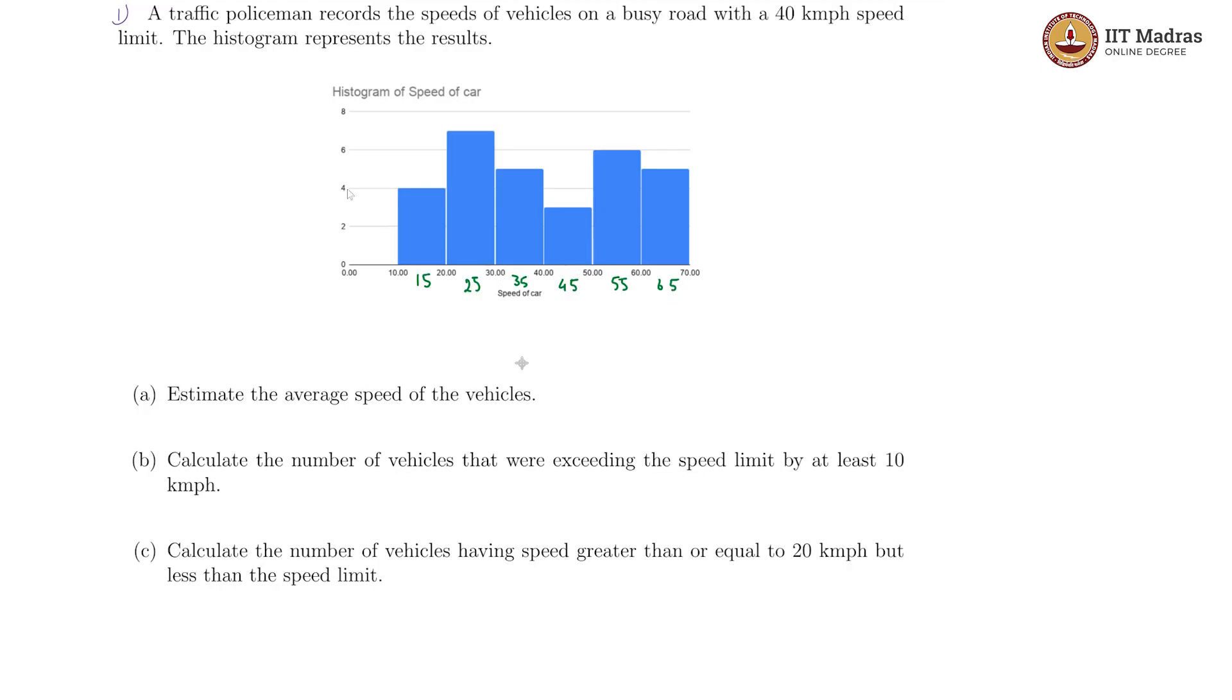And now how many are there? 4 for the first class. We are going to do 4 into 15 plus. This is between 600, so this must be 7. 7 into 25 plus this is 5.